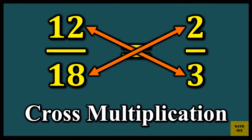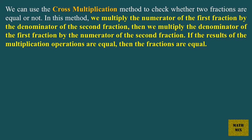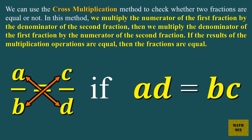The cross multiplication method. We can use the cross multiplication method to check whether two fractions are equal or not. In this method, we multiply the numerator of the first fraction by the denominator of the second fraction, then we multiply the denominator of the first fraction by the numerator of the second fraction. If the results are equal, then the fractions are equal. A over B equals C over D, if A times D equals B times C, where B and D are not zero.